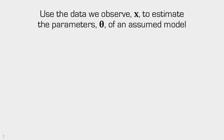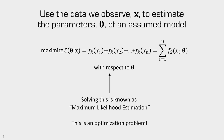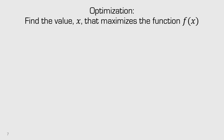In general, we're trying to use the data we observe to estimate these unknown parameters of an assumed model. The likelihood function is what we're trying to maximize with respect to these parameters — theta, a vector of unknown parameters. This is really an optimization problem, so to understand how we're going to do this, we need to learn some general principles about optimization. In optimization, we're trying to find the values x that maximize a function of x.